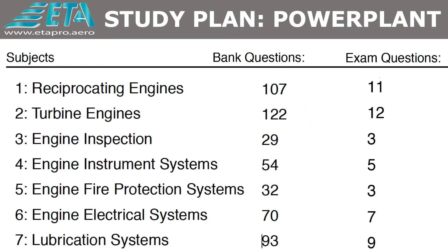Lo que quiere decir, en pocas palabras, que de cada tema solo sale un cierto porcentaje en el examen. Por ejemplo, de Reciprocating Engines se encuentran disponibles en las aplicaciones de estudio 107 preguntas, y de estas, solo salen 11 en el examen.